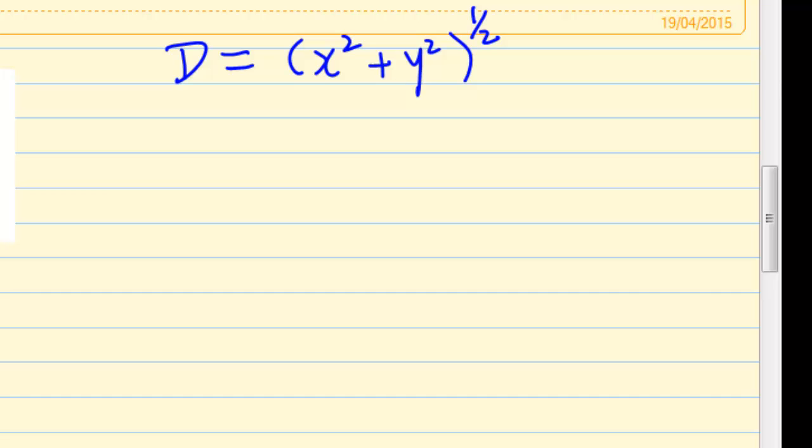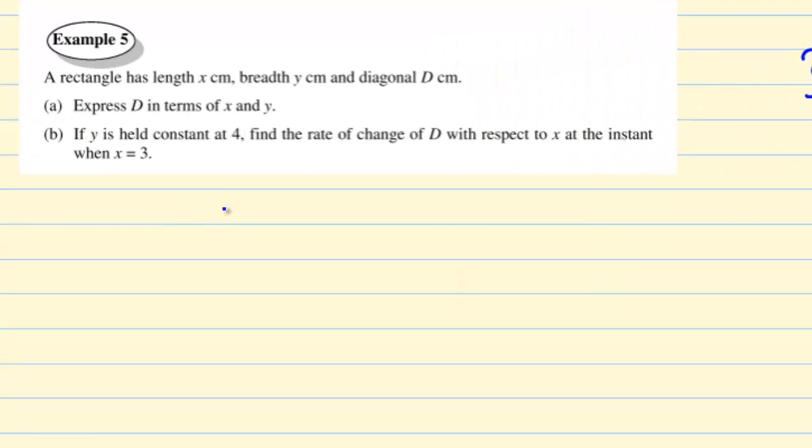D equals x square plus y square raised to the power of half. So partial differentiation of D with respect to x. Differentiate x square plus y square raised to the power of half with respect to x. Using the power rule, if you remember, differentiation of x power of n is n times x power of n minus 1.